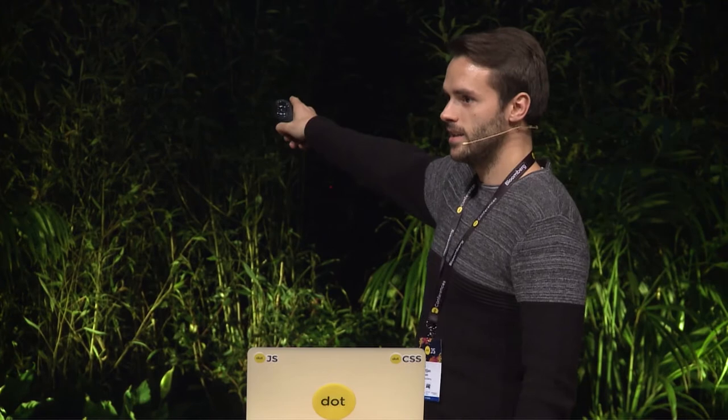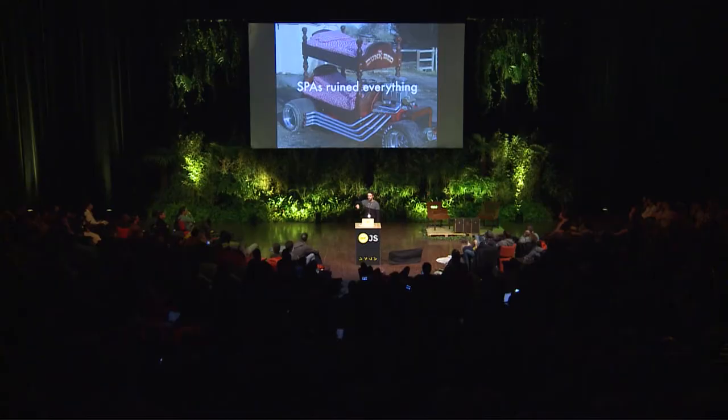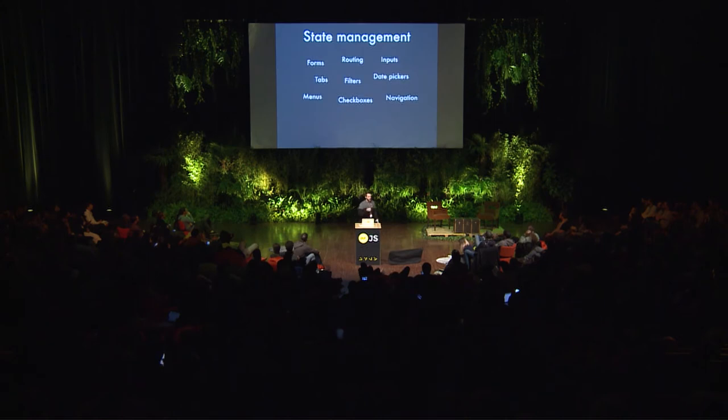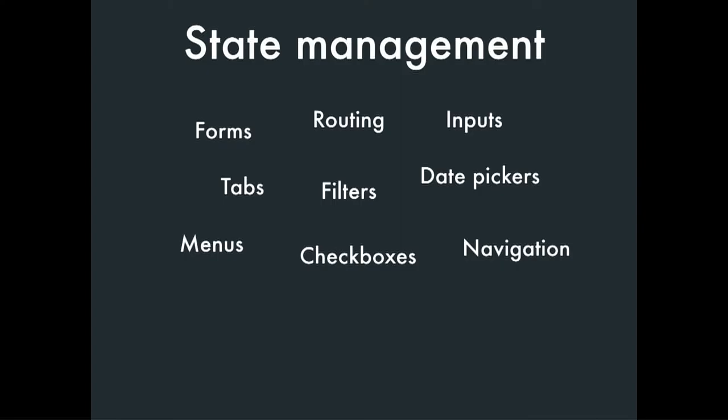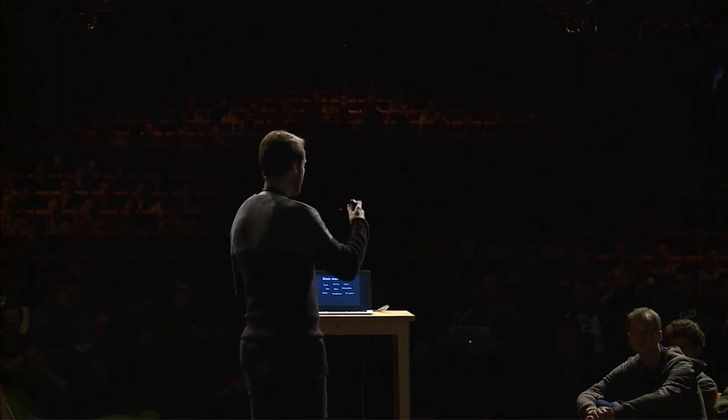In my opinion, single page apps ruined everything. We were trying to make a faster car, but somehow we got there. So, we put everything on the client. We made everything terrible. And we decided to put everything around state management on the client. So now we have routing, forms, tabs, filters, menus, checkboxes, inputs — everything else is on the client. But the elephant in the room, the big thing that ruins state management for everyone right now, is data.